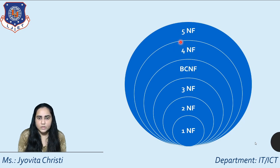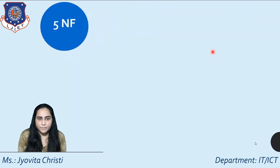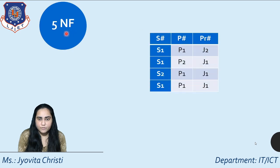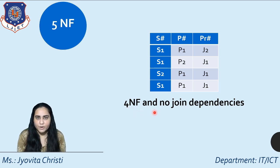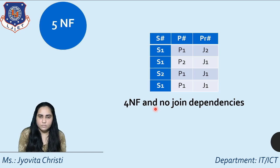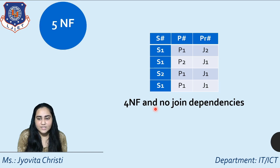Now we move to the last step of normalization: 5NF, which stands for the fifth normal form. The conditions for 5NF are that the relation should be in 4NF and there should be no join dependencies. Join dependencies are a different kind of dependency from what we've seen before.